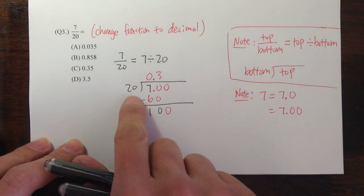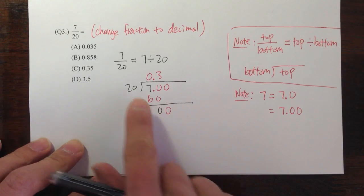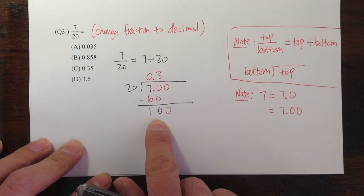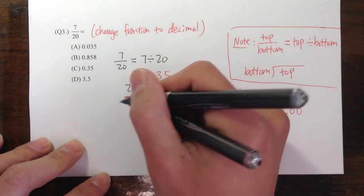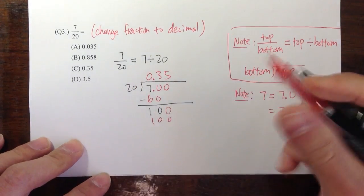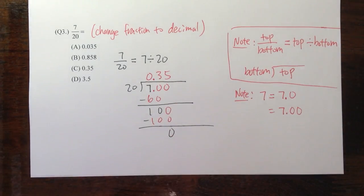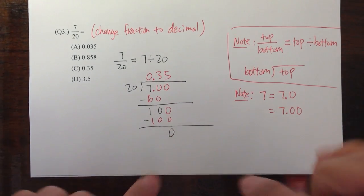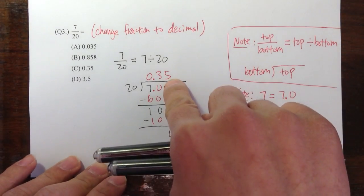So bring down this zero here, and that will allow us to look at this question as 20 and 100. 20 goes into 100 exactly five times. Five times 20 is 100. And then when you subtract 100 minus 100, you get zero. And this is the remainder. When the remainder is zero, that's the answer.